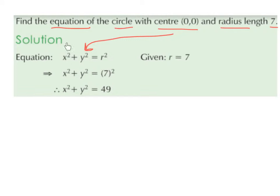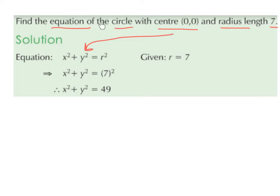The equation formula is x² + y² = r², where r represents the radius. We've been told the radius is 7, so r = 7. We swap r for 7, giving 7² = 49. So the equation of the circle is x² + y² = 49.